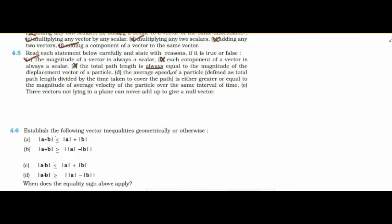The average speed of a particle defined as total path length divided by time taken is either greater than or equal to the magnitude of average velocity, because distance is greater than or equal to displacement. Therefore average speed is always greater than or equal to average velocity — true. Three vectors not lying in a plane can never add up to give a null vector — this is also true.